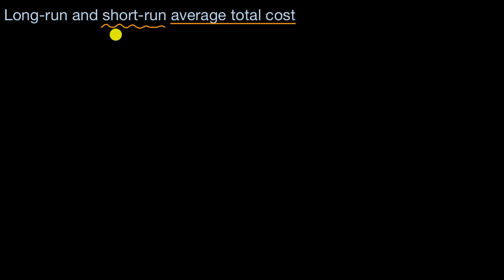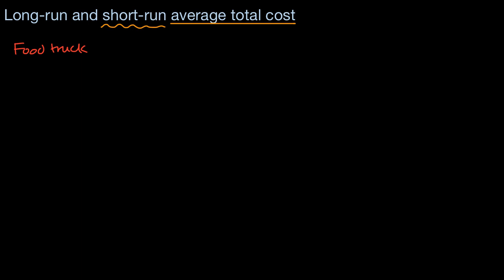What we're going to do in this video is think about how the average total cost we've studied in previous videos — which were actually short-run average total costs — relate to the long-run average total cost. So let's imagine that we are trying to open up a food truck business, and let's say we're going to sell tacos.